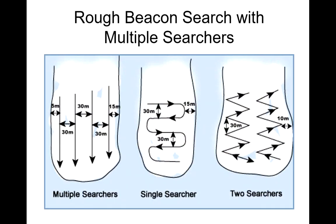This picture shows examples of different configurations for a rough beacon search with multiple searchers. The left image has searchers going straight downhill with enough searchers to cover the whole path. The middle picture shows one searcher making a pattern to not miss any locations. The right shows a zigzag pattern with two searchers still covering all the surface area. As soon as someone picks up a signal — assuming only one person is buried — that person can follow the signal in and do a traditional beacon search.